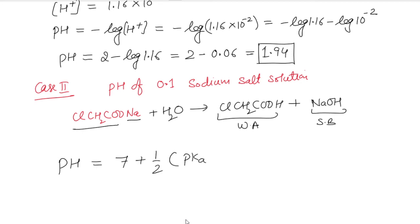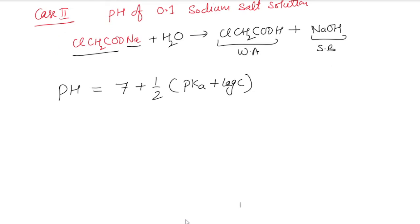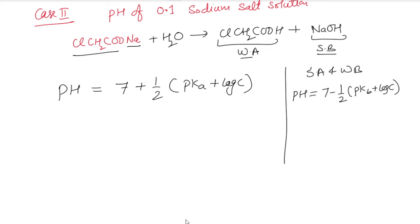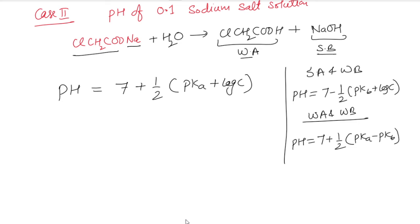For a salt of strong base and weak acid, pH is more than 7. The formula is: pH = 7 + ½(pKa + log c). For a salt of strong acid and weak base, it is less than 7, so pH = 7 − ½(pKb + log c). For a salt of weak acid and weak base like ammonium acetate, pH = 7 + ½(pKa − pKb).